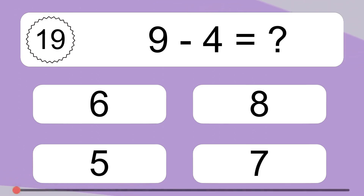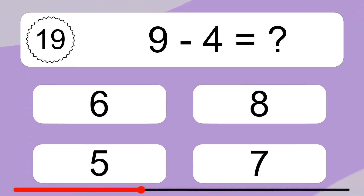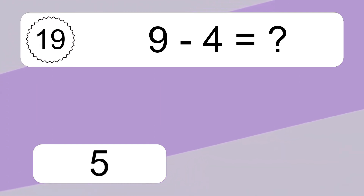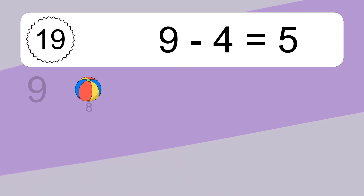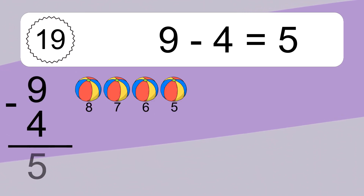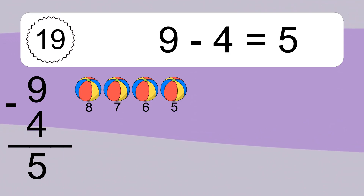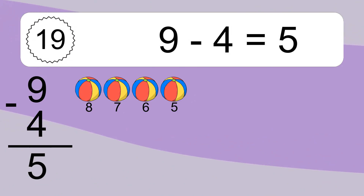16 minus 9 minus 4 equals what? 16 minus 9 minus 4 equals 5. Let's count it: 8, 7, 6, 5.